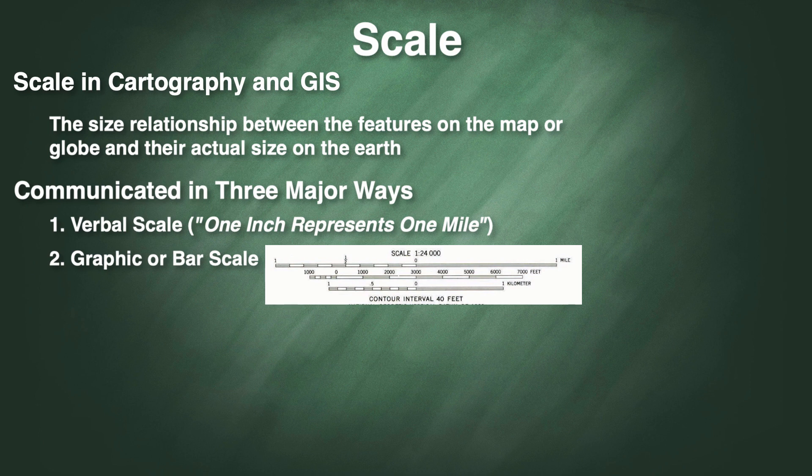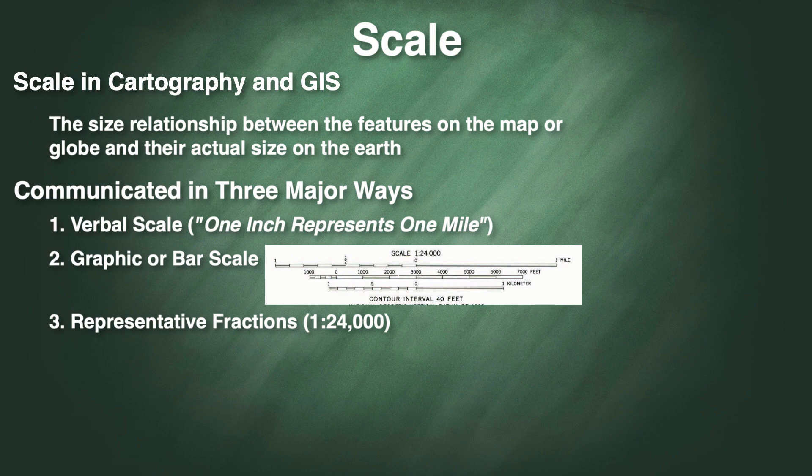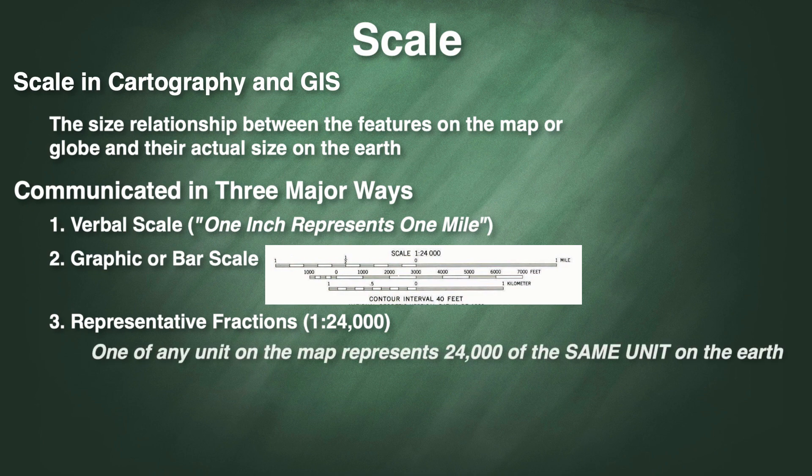Frequently, however, cartographers and other geographic information specialists will communicate scale relationships in a third way, the use of what we call a representative fraction, such as the expression 1 to 24,000. If you are working with a map at a scale of 1 to 24,000, then it means that one of any unit on the map will represent 24,000 of the same unit in the actual world.